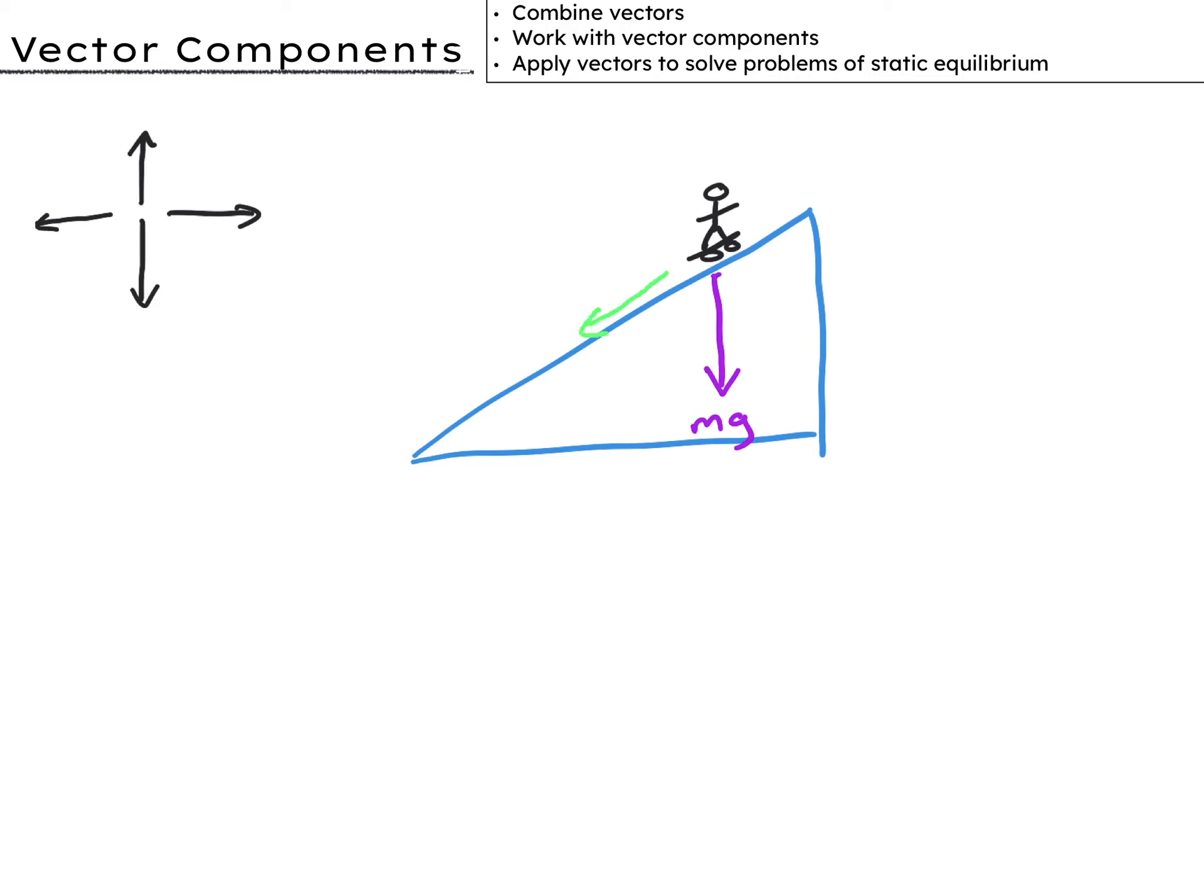Gravity acts straight down through the center of mass, and the skateboarder moves this way at an angle of 80 degrees to the direction of their weight.